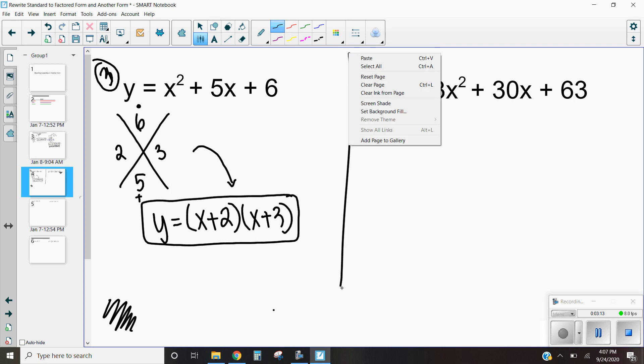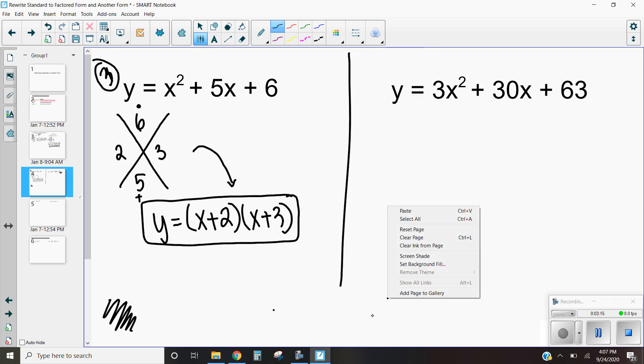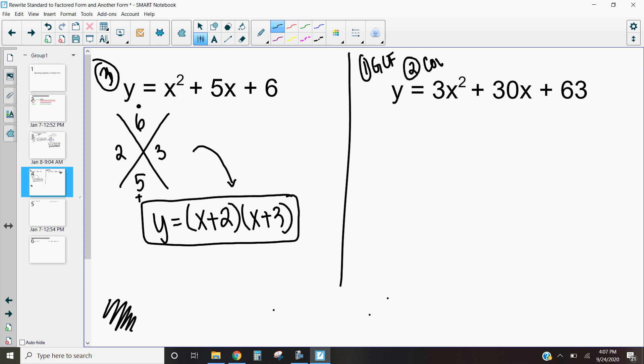Okay, the last example that we are going to go over all together is going to be this one over here. So remember when we factor, we follow those three rules. The first thing we have to do is look for greatest common factor. And then we count our terms, right? And then make sure that we factor completely.